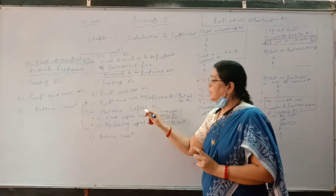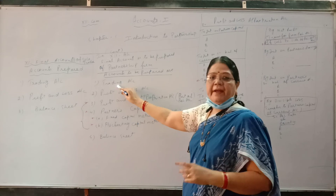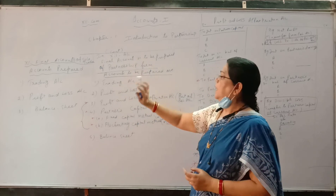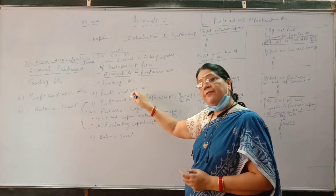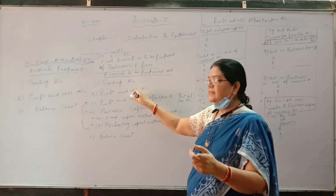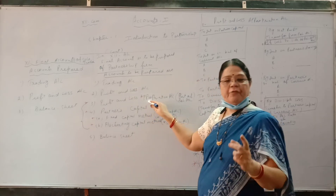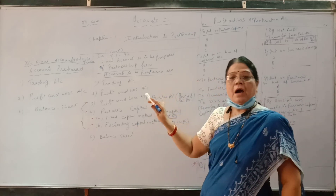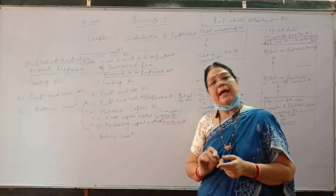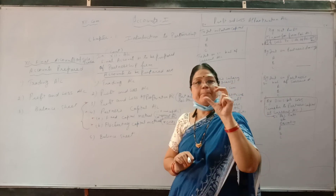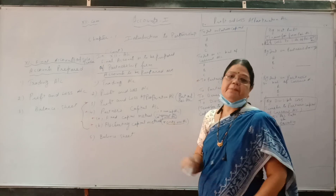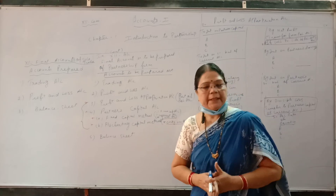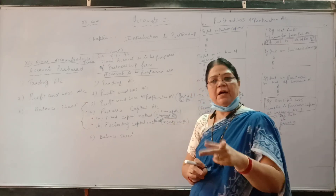But profit and loss appropriation account is prepared to know the divisible profit among the partners. In trading account, we find gross profit, then carry it to the credit side of profit and loss account. In profit and loss account, we find net profit. This net profit is transferred to the credit side of profit and loss appropriation account. After writing all the expenses and income of only partners, we will get divisible profit.